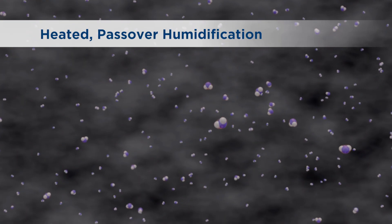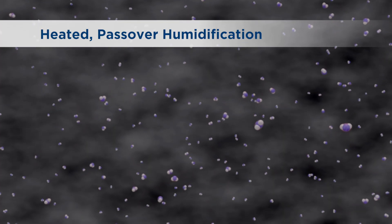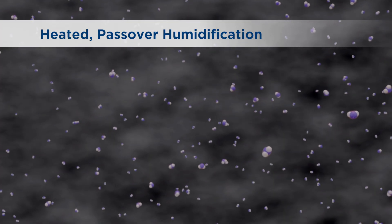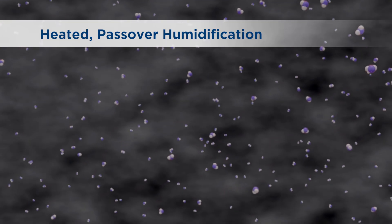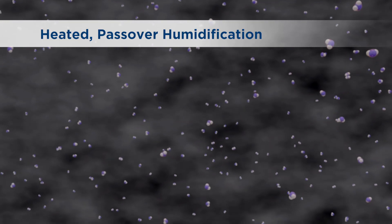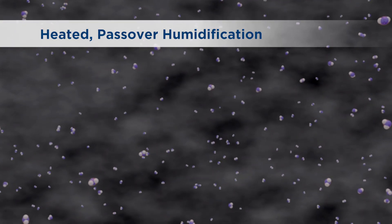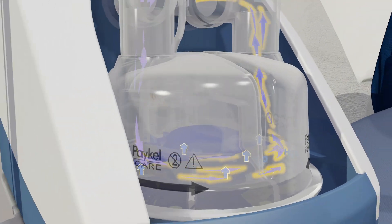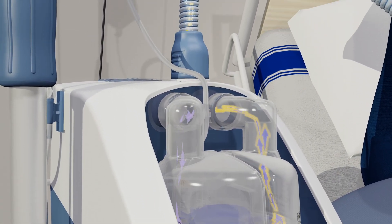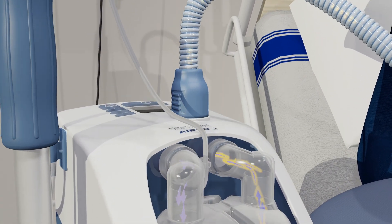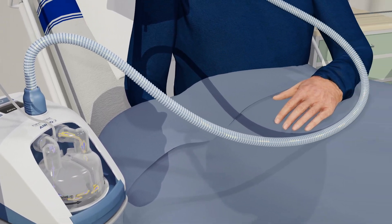So, by using water vapour for humidification instead of water droplets, the Evo2 can reduce the risk of infection. This water vapour, from the headspace in the water chamber, enters the breathing tube through the port on the top of the Evo2.